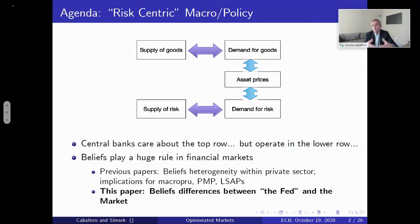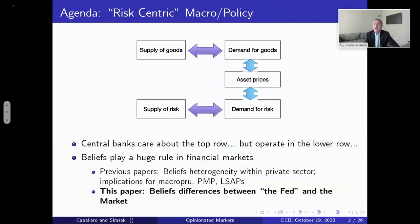With this perspective, issues of beliefs that are specific to financial markets become important for macroeconomic policy as well. In previous papers, we looked at belief heterogeneity within the private sector and the implications for macroeconomic policy, financial monetary policy, large-scale asset purchases, and similar topics. Now, in the paper I'm presenting today, we don't look at differences of beliefs within the private sector, but a difference of beliefs between the private sector — which we call the market — and the central bank. Apologies for calling the central bank the Fed; I'm going to be talking about policy mistakes all the time, so it may be better that I talk about the Fed rather than the ECB.